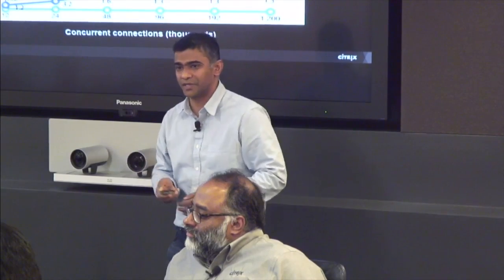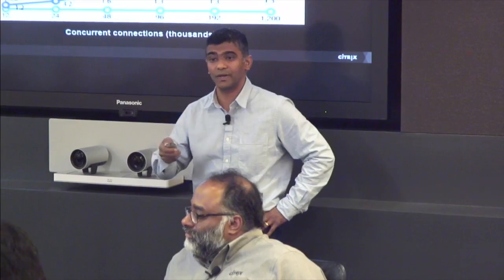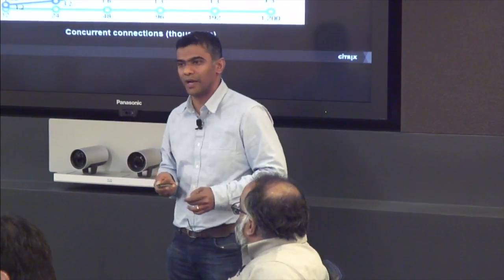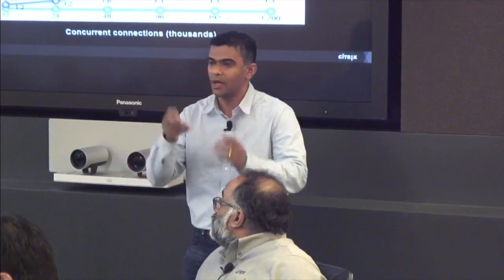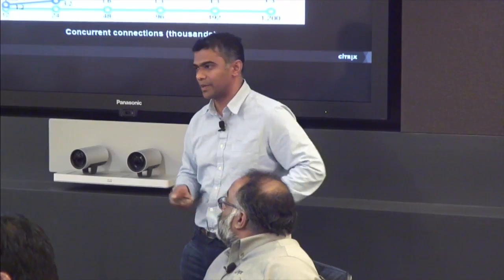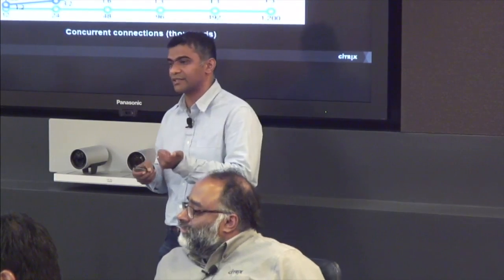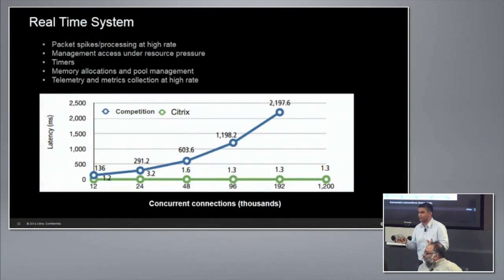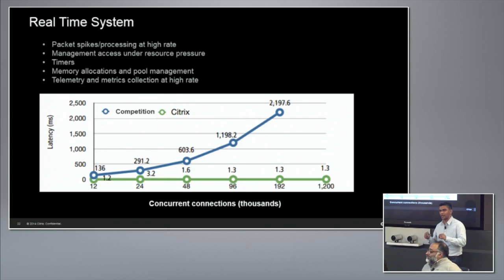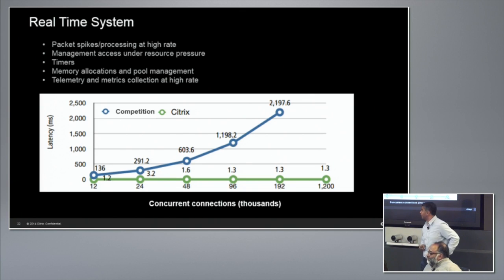Different features have different memory requirements, but that doesn't mean we give all memory to any one feature. We use slab allocations to take advantage of TLBs and do pool management so no single feature can consume all memory. We realized early on that going to BSD for memory management wasn't going to scale for our requirements, so we built our own memory manager.